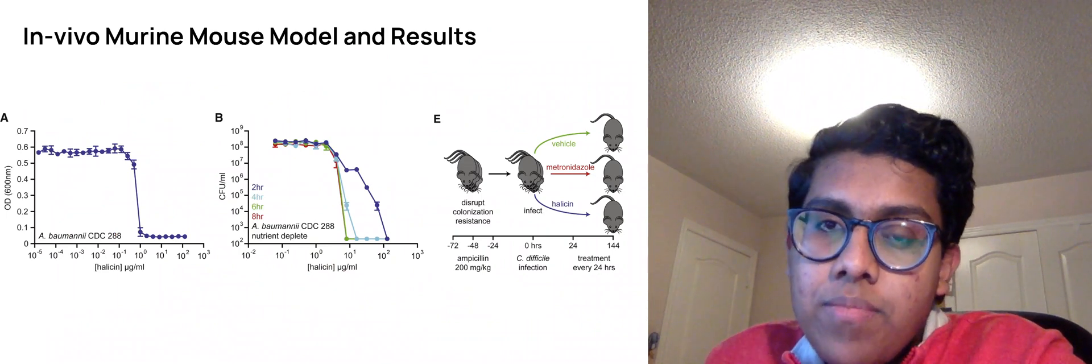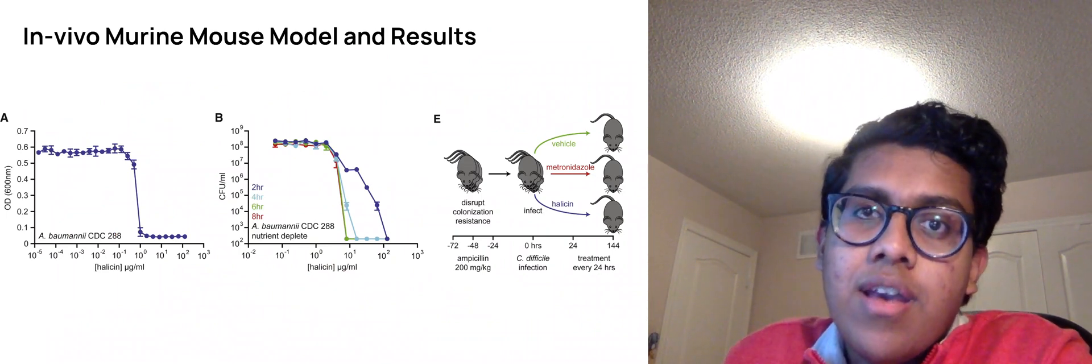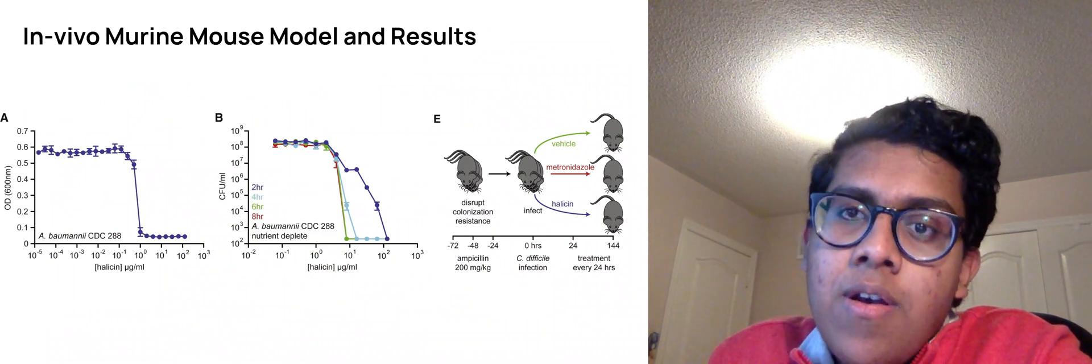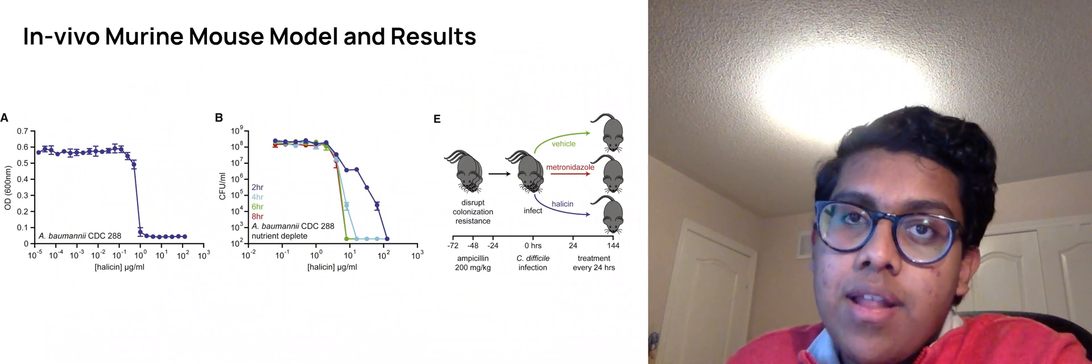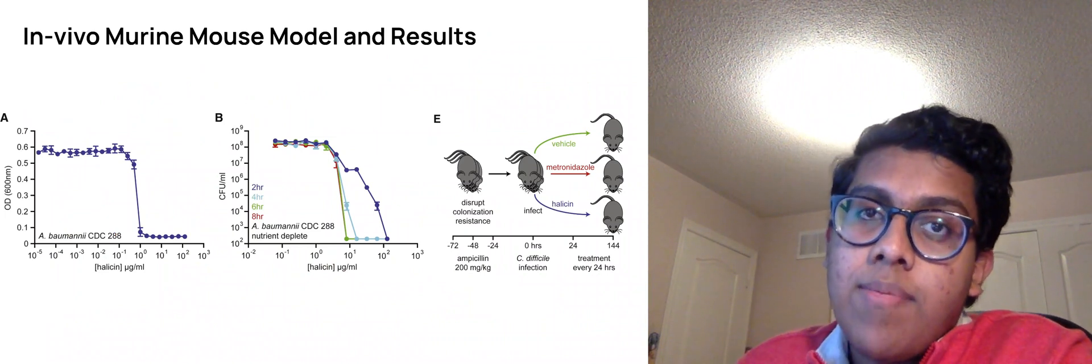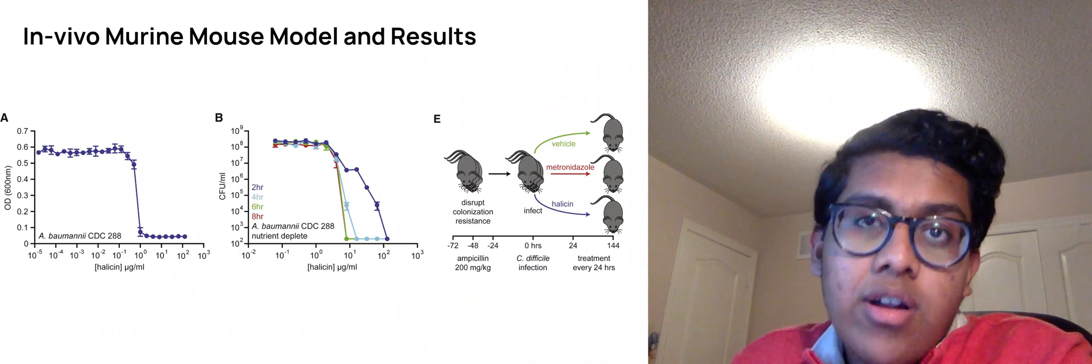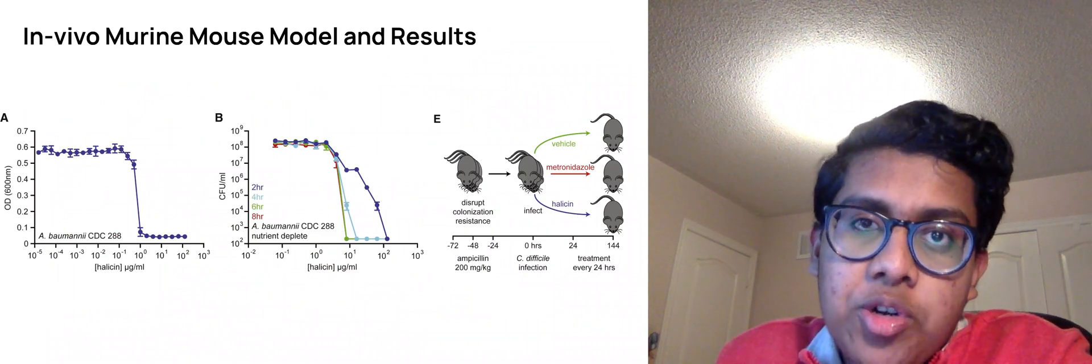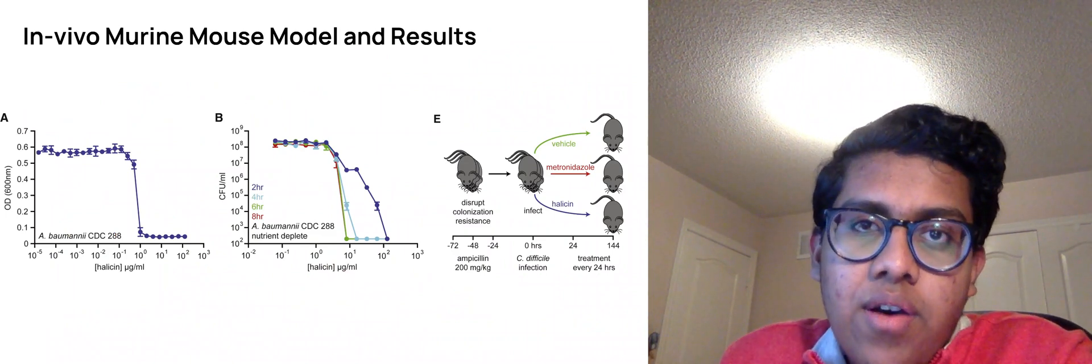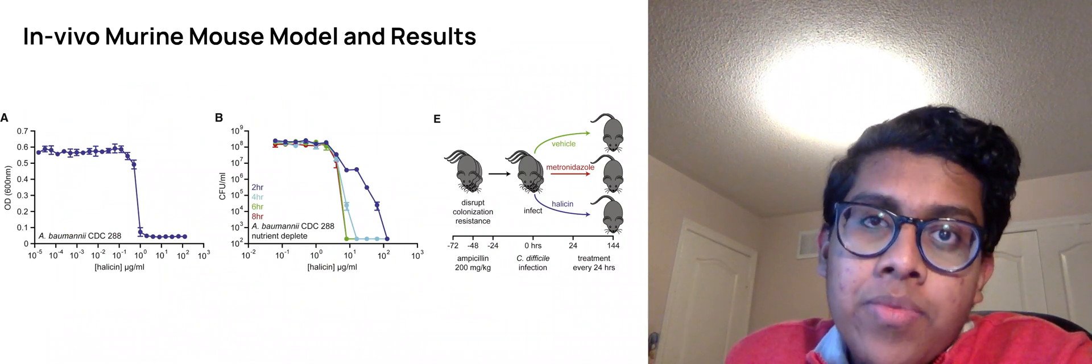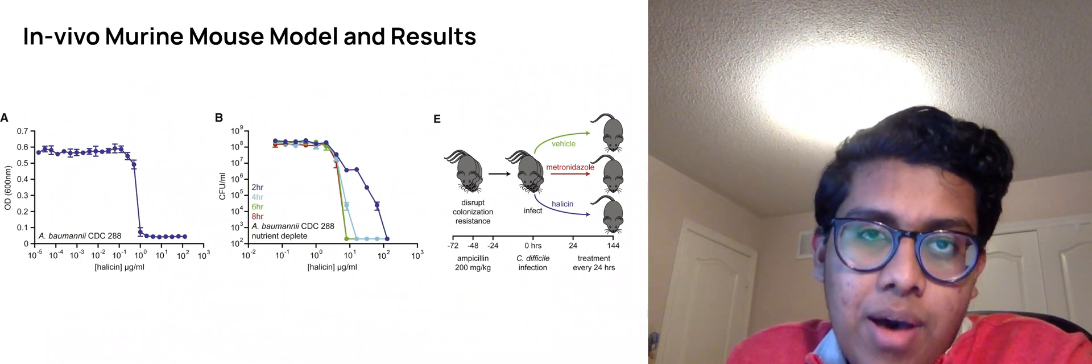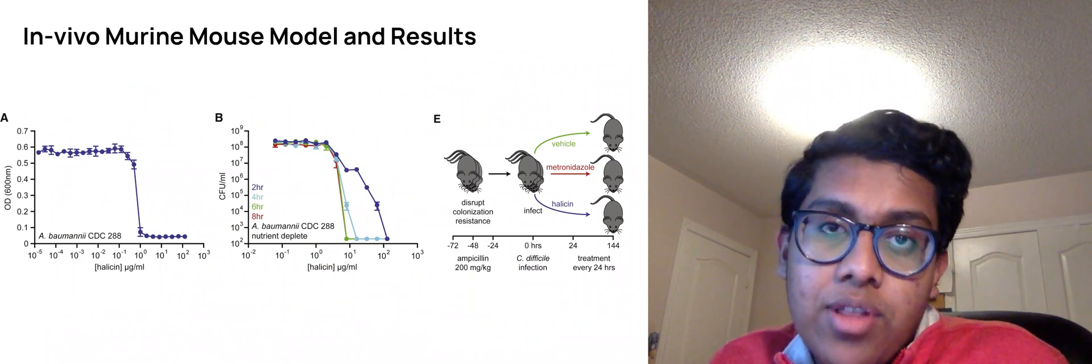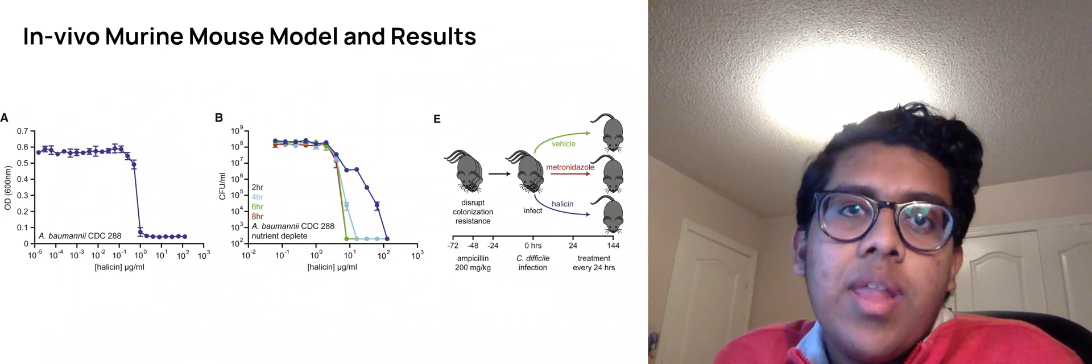So essentially, really the strongest result that you can take from this is that when they applied this to mice models which contain this baumanii pathogen, they actually found that in a control group that had six mice that did not respond well to another antibiotic called ampicillin, five out of six of those mice actually responded well to the halicin treatment. After about six doses over a 144 hour period, the amount of this baumanii pathogen left in their system was actually below the limit of detection. So this was a really, really strong result, and I think why they were able to publish in Nature.